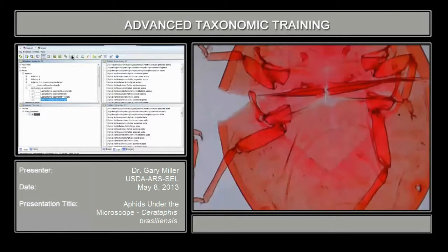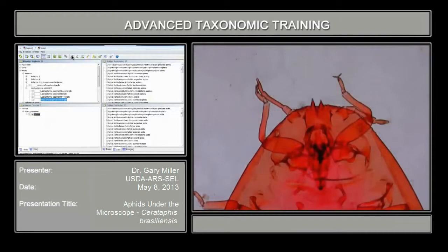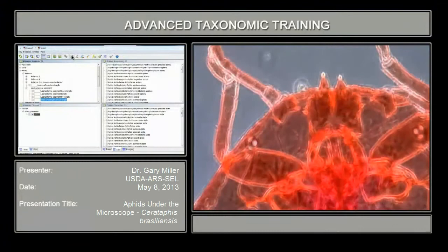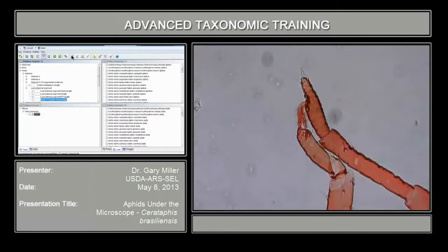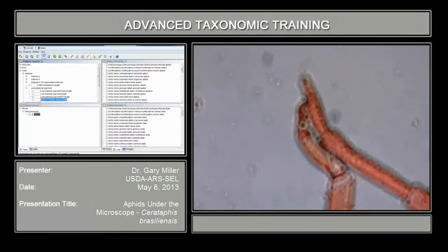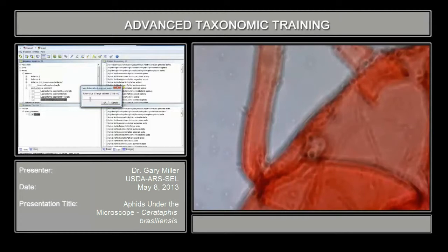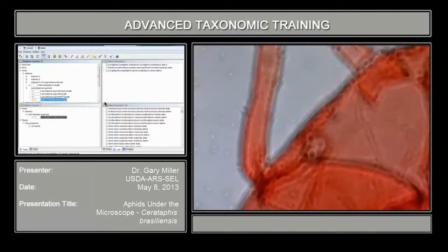Now we're going to look at the process terminalis again. You can see the antennal structure on this particular specimen is a lot different than the previous one we looked at. Routinely, aphids have usually six antennal segments, but you can see there's reduction in the adult in this one. We're going to measure the process terminalis to the base — compared to other specimens, there's a big difference. The range is 0 to 18, so put 0.5 in here. That really pruned the tree very quickly.